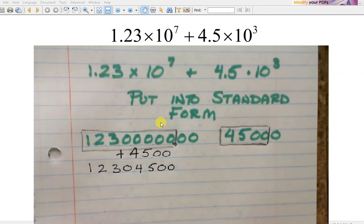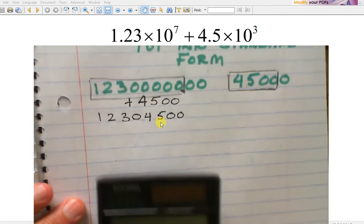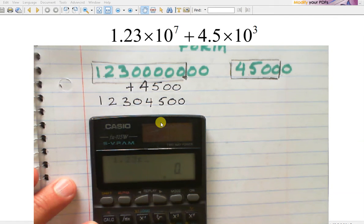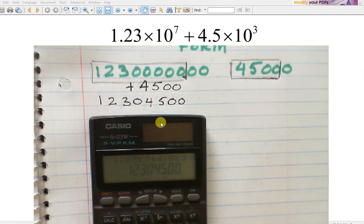Is that the same number I got with my calculator? Let's try it with the calculator again. So 1.23 scientific notation form to the seventh plus 4.5 scientific notation to the third. 1, 2, 3, 0, 4, 5, 0, 0. Yep.